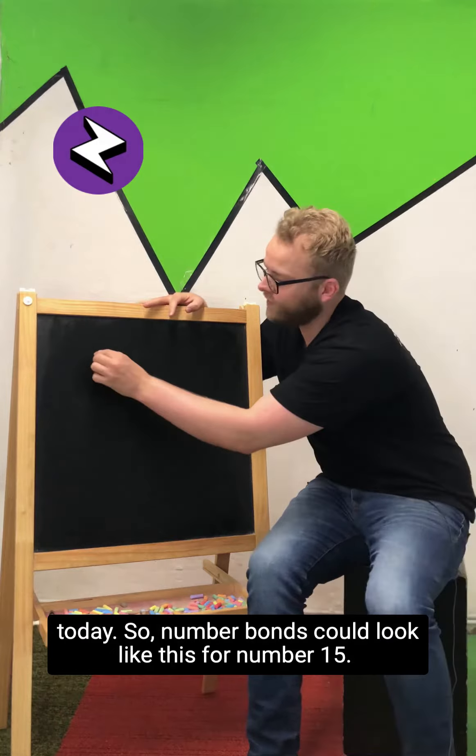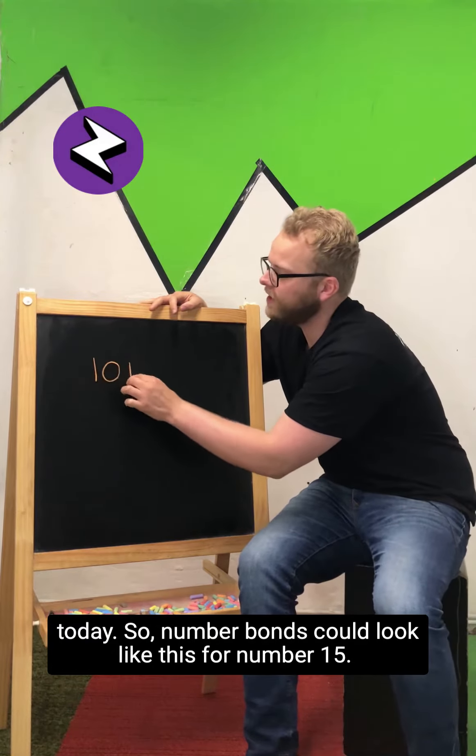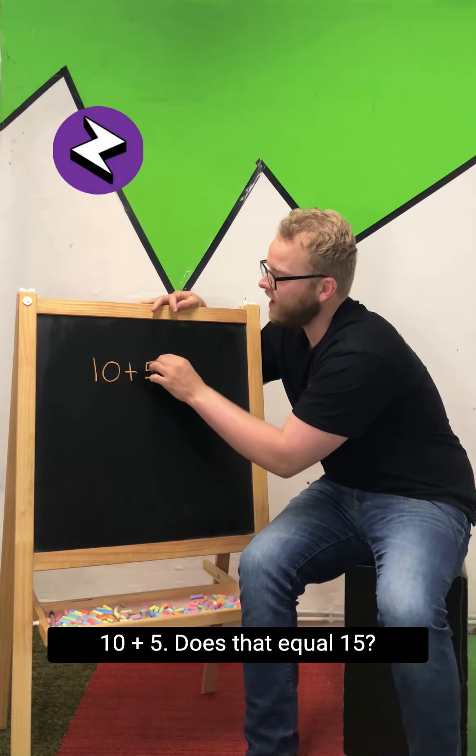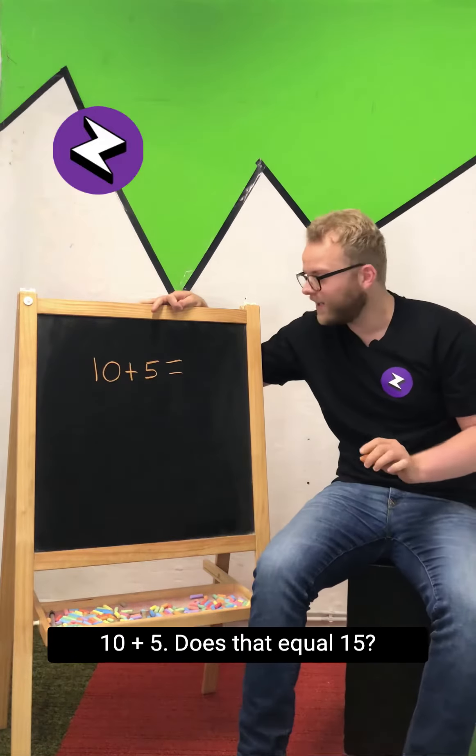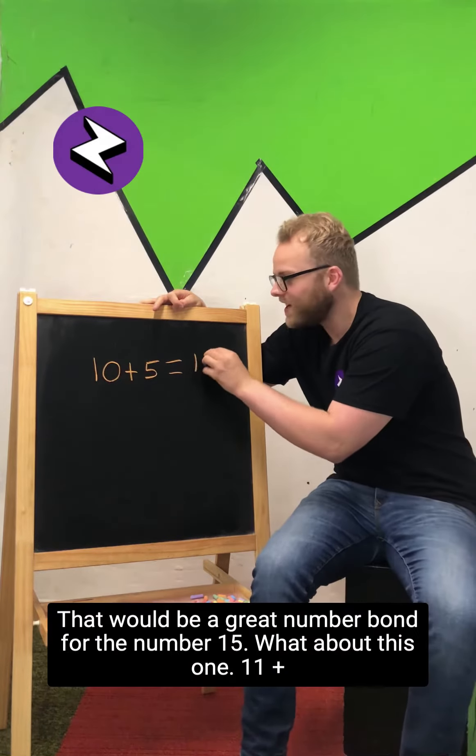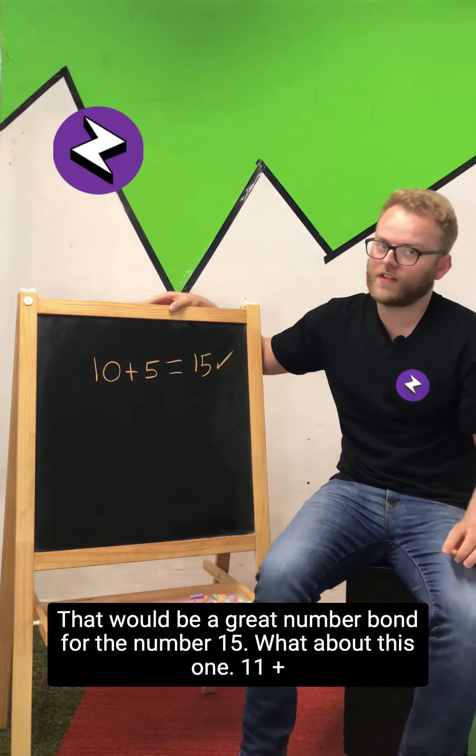So number bonds could look like this for number 15. It could go 10 plus 5. Does that equal 15? Yes, well done. That would be a great number bond for the number 15.